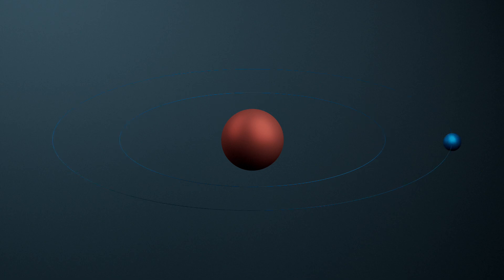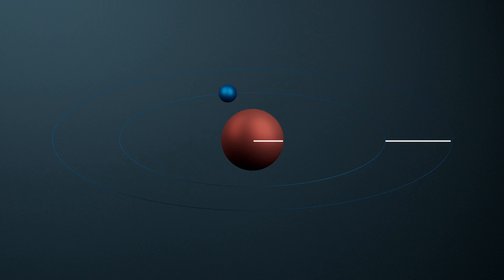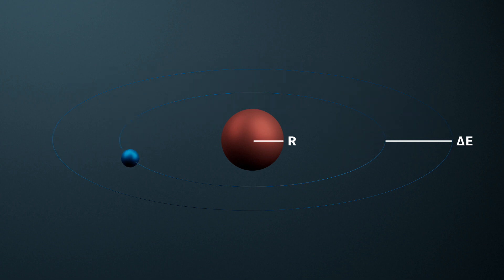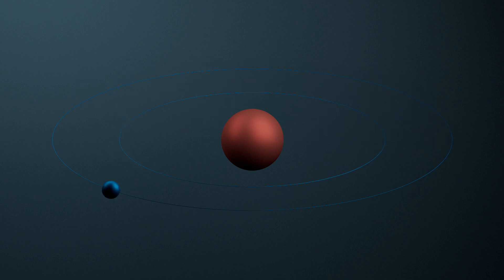This theory states that the electron can adopt different states with specific energy levels, symbolized here by two orbits. According to the theory, the difference between these states depends on the size of the proton. However, since the electron is moving a long distance away, it's only weakly affected by the radius of the proton, and this difference is very difficult to measure.